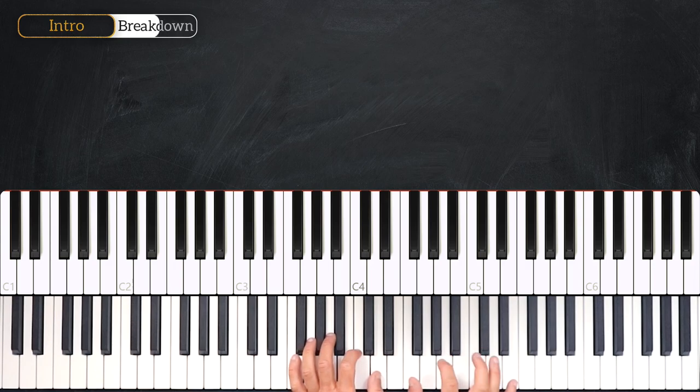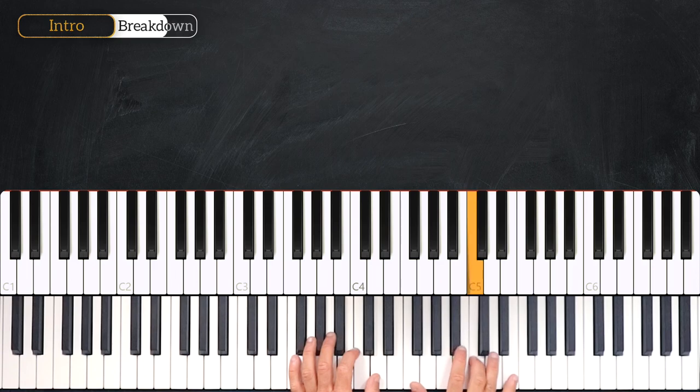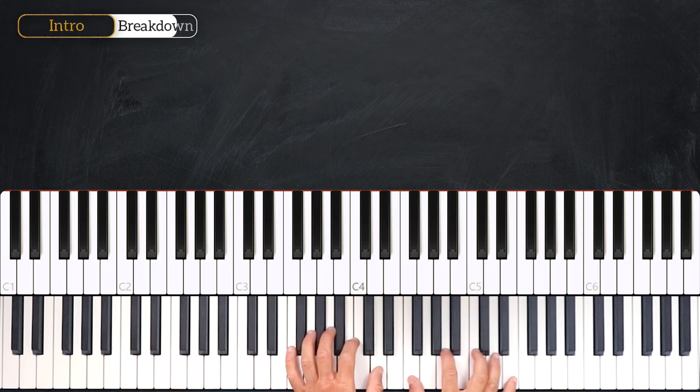D minor 7, D minor 7 and on the right hand will play this melody. So we have C, D, E, D. With the chords, 3, 4. Very nice.